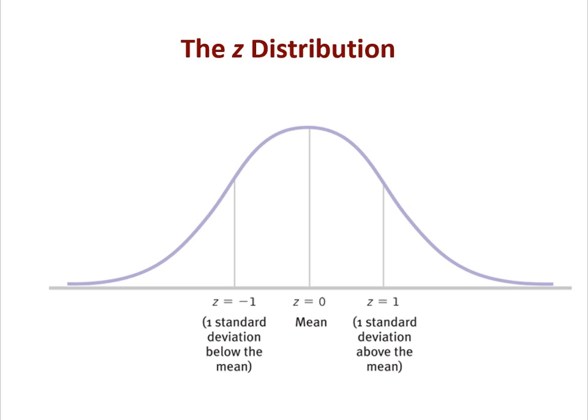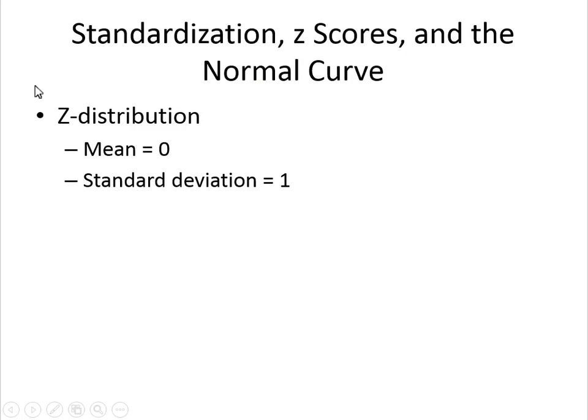The mean of the Z-distribution is always 0, and the standard deviation is 1. That makes the numbers really easy to work with. What you have to keep separate is that the mean and standard deviation of the Z-distribution are always 0 and 1, but the mean and standard deviation of the original scale are something else — those are given to you. We're going from original scale to Z, and that transformation is always true.